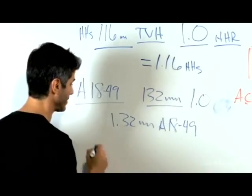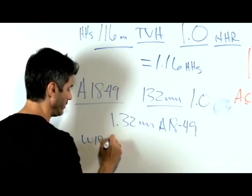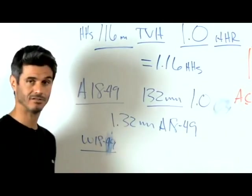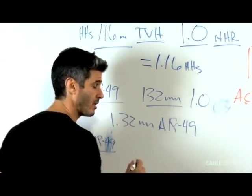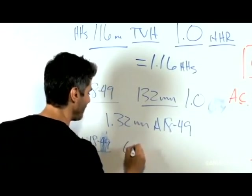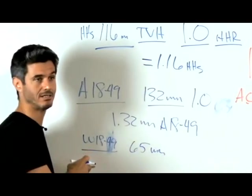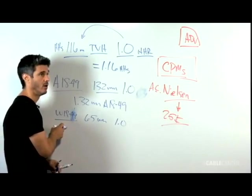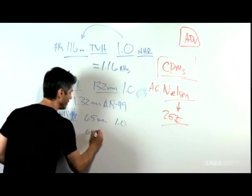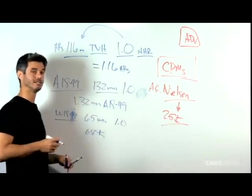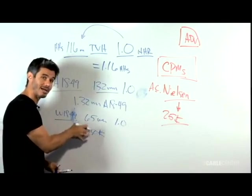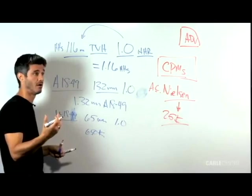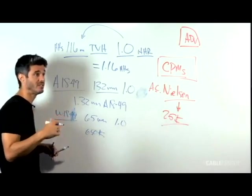If you get more specific, let's say women 18 to 49, there is an available universe of around 65 or 66 million women 18 to 49. So a 1.0 against women 18 to 49 would be around 650,000 women 18 to 49. You can do a much smaller number against this much slimmer demographic because it's more targeted and therefore your CPMs are higher.